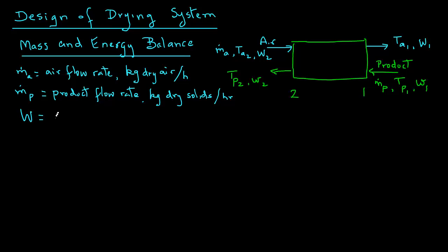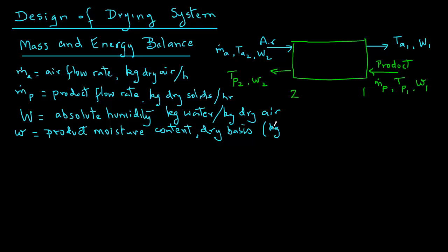Capital W is the absolute humidity. If you remember from psychrometrics, it's also called humidity ratio or specific humidity, and it is kilograms of water per kilogram of dry air. Small letter w is the product moisture content on a dry basis, and the units will be kilograms of water per kilogram of dry solids.